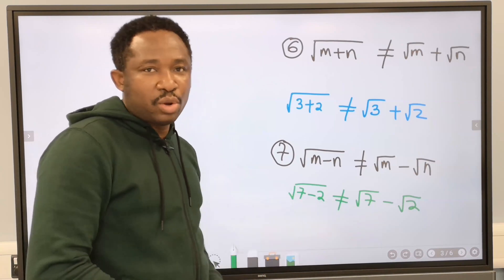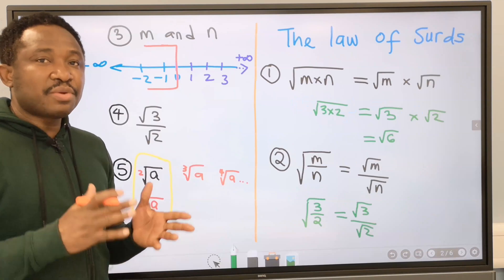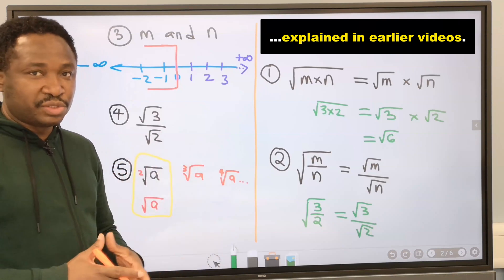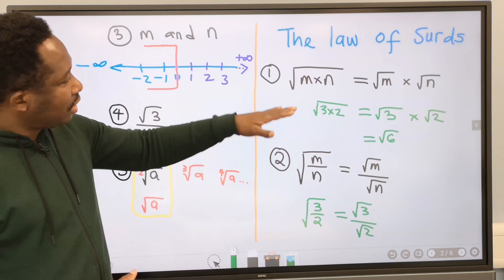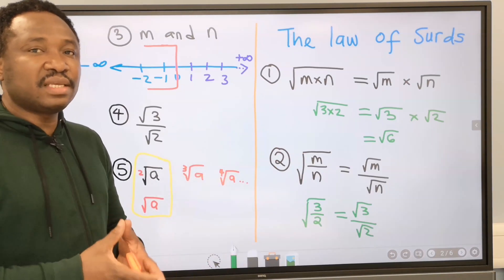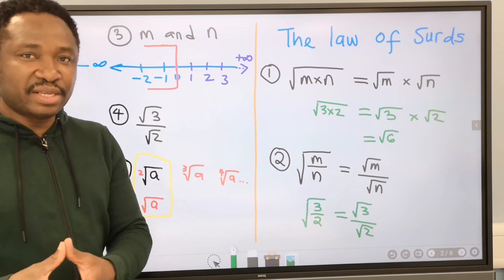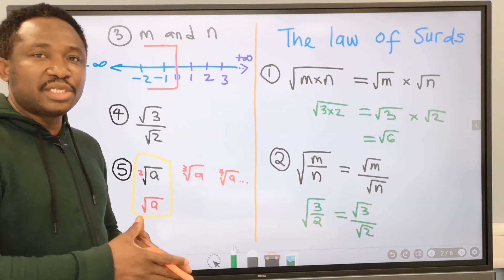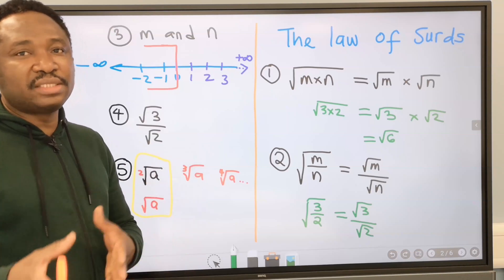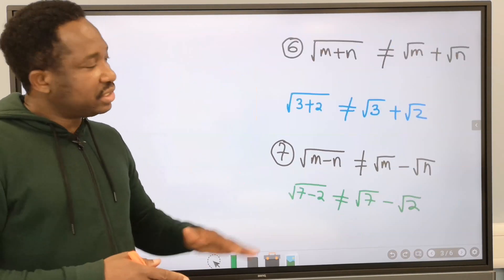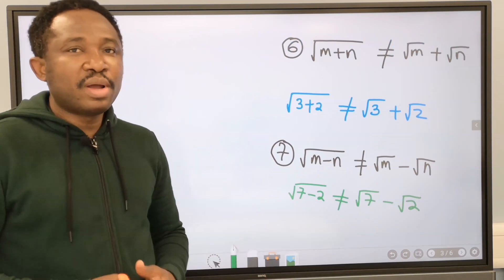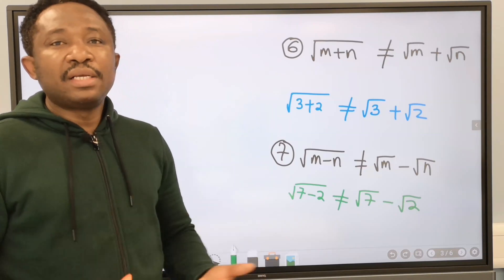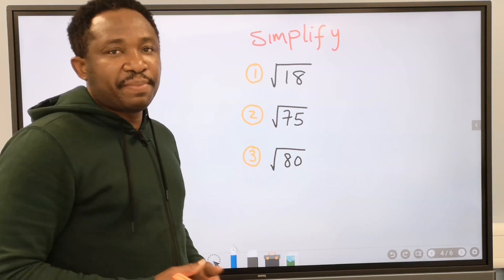These are not equal in surds. Now that you have understood the background of surds and the laws governing surds, especially laws one and two, we can now move into simplifying surds, adding and subtracting surds, rationalization of surds, and how to handle conjugate surds. Always remember not to make this mistake while solving surds. Now let's begin simplifying surds.